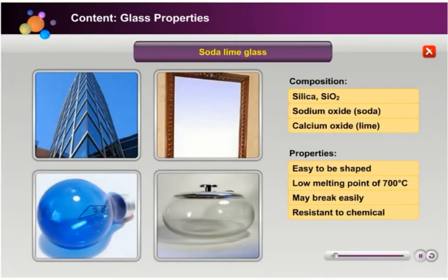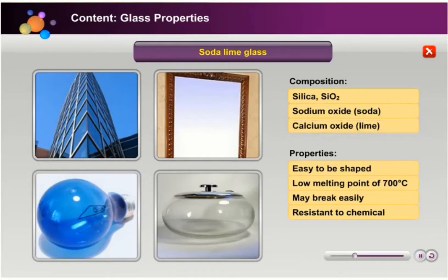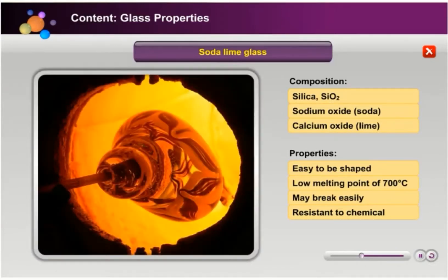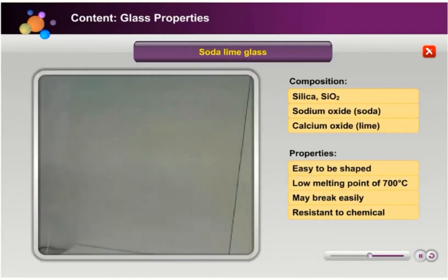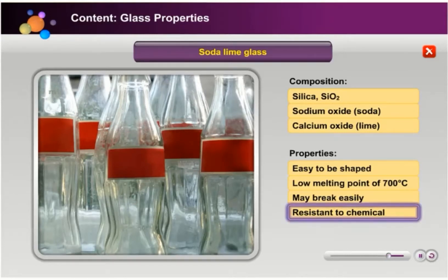The most common type of glass is soda lime glass. Soda lime glass is composed of 60–80% silicon dioxide, 15% sodium oxide and 10% sodium carbonate. A low percentage of other materials can be added for a desired characteristic. Soda lime glass has a relatively low melting point of 700 degrees Celsius. It is less resistant to heat and may break easily. Soda lime glass has good chemical durability and is resistant to chemical attack from aqueous solutions, so it will not contaminate the contents inside or affect the taste.